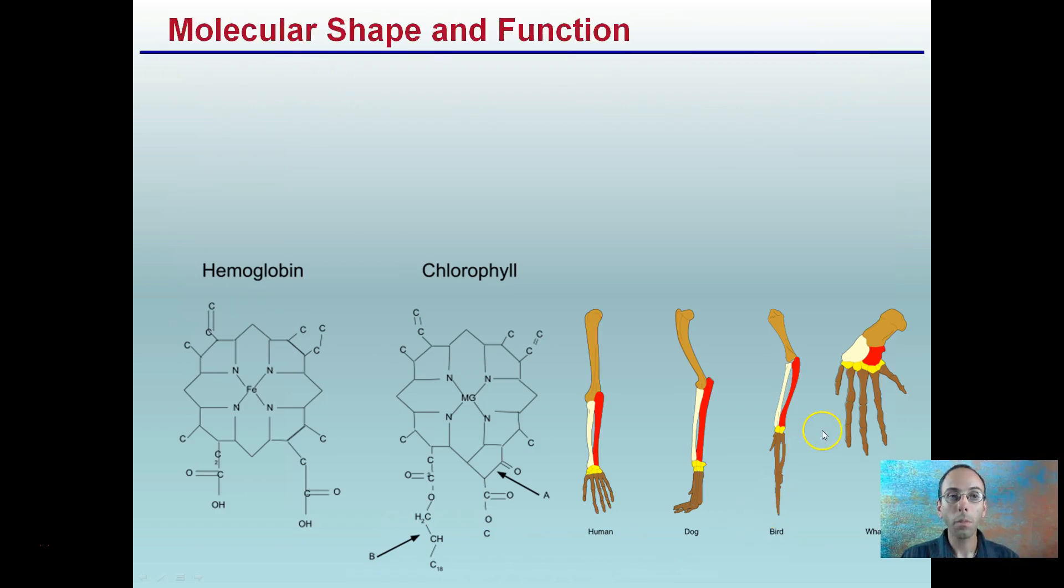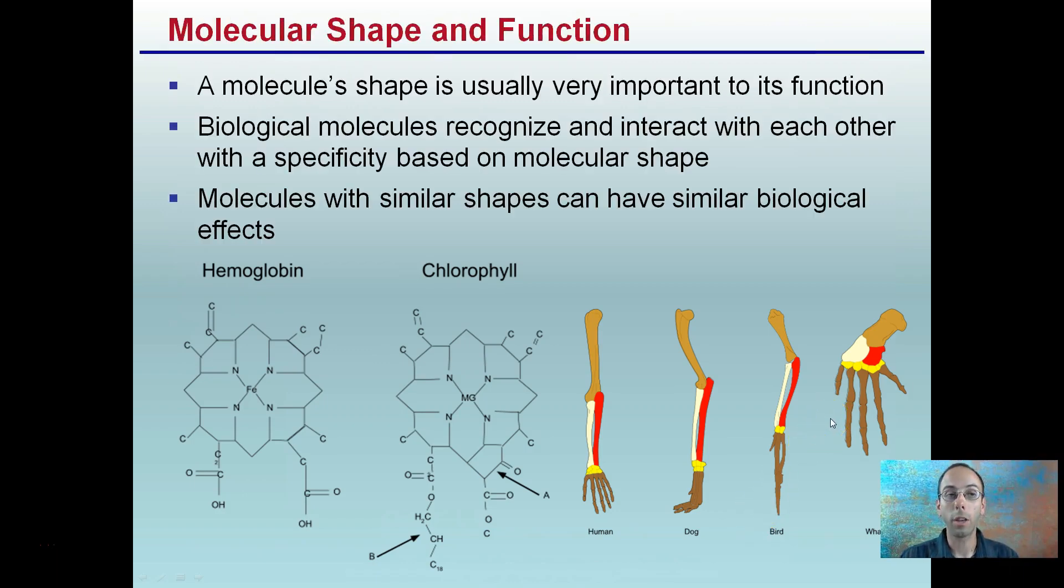So getting into it, why is this important? Why do we need to understand shape? Molecular shape and function are very important. A molecule's shape is very important to its function. Biological molecules recognize and interact with each other with specificity based on molecular shape. Molecules with similar shapes can have similar biological effects.